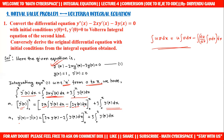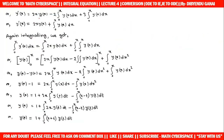This gives y'(x) − y'(0) = 2x·y(x) − 2∫₀ˣ y(x) dx + 3∫₀ˣ y(x) dx. The value of y'(0) is given as 0. Substituting, we get y'(x) = 2x·y(x) + ∫₀ˣ y(x) dx. Now we have y'(x) but we need y(x), so we integrate again.